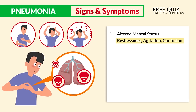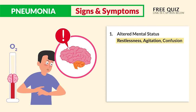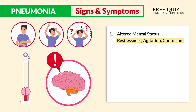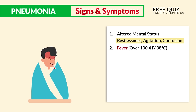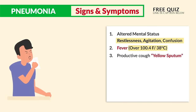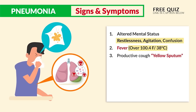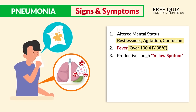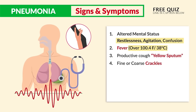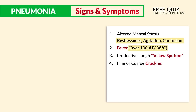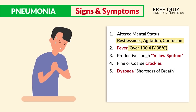Altered mental status can lead to deadly respiratory failure. The brain is very sensitive to oxygen, so these keywords also cross over for other conditions with low oxygen, like increased ICP and strokes. Number two is fever — key term: over 100.4°F or 38°C, always an NCLEX favorite. Number three is a productive cough with yellow sputum from infection. Number four is fine or coarse crackles upon auscultation from fluid and mucus-filled lungs. Number five is dyspnea — shortness of breath.